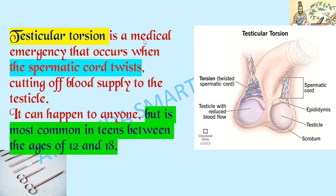Testicular torsion is a medical emergency that occurs when the spermatic cord twists. In torsion, the spermatic cord is twisted, leaving the testicle with reduced blood flow — this twist cuts off blood supply to the testicle. It can happen to anyone, but is most common in tweens between the age of 12 and 18.